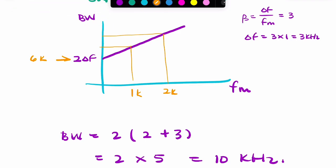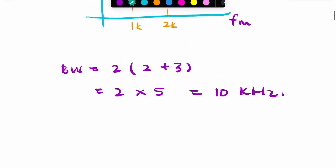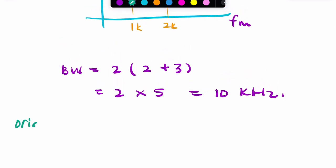From, well, 10 kilohertz from 8 kilohertz. So we can calculate that by saying originally the bandwidth would be 2 times (1 plus 3), which is 8 kilohertz. So bandwidth would increase...